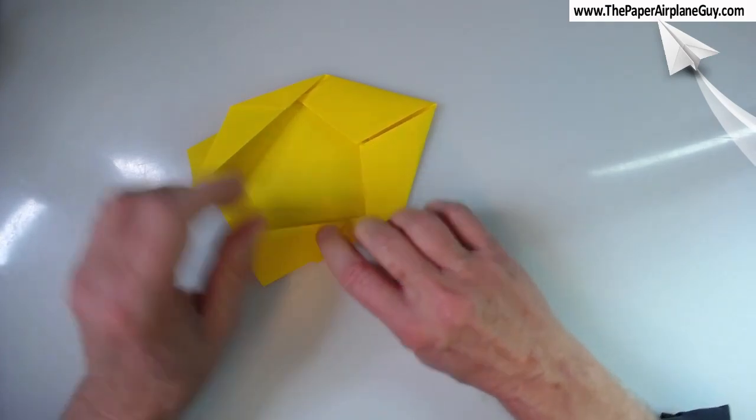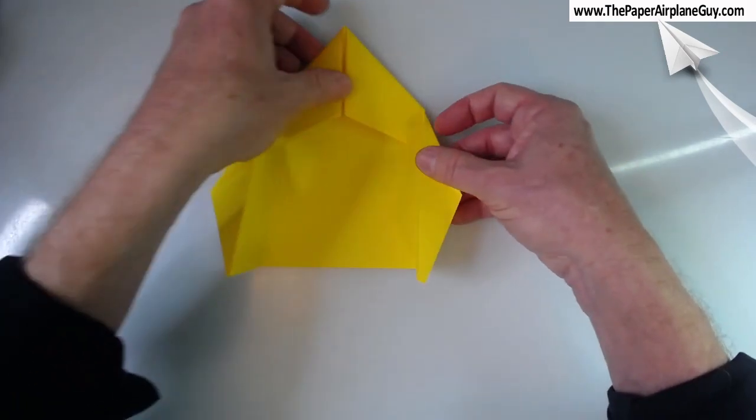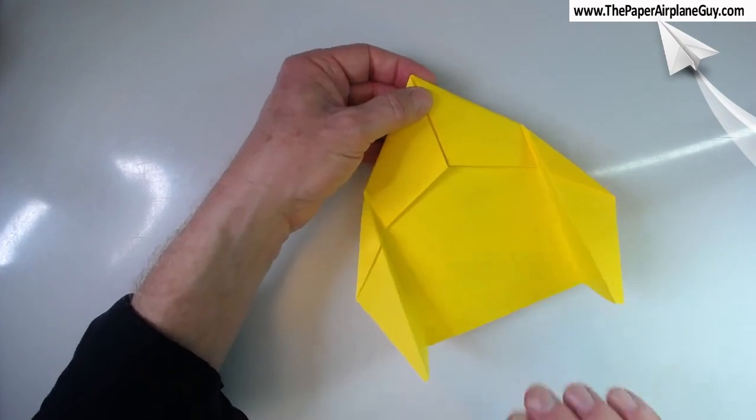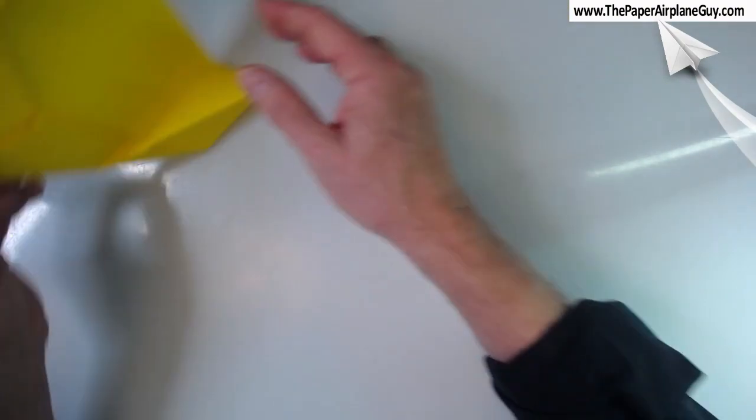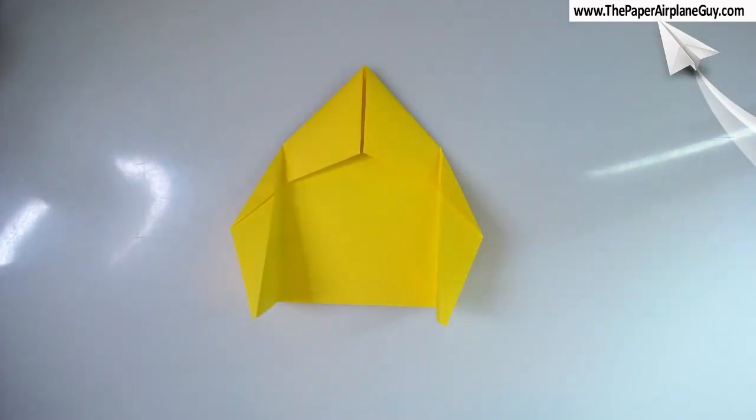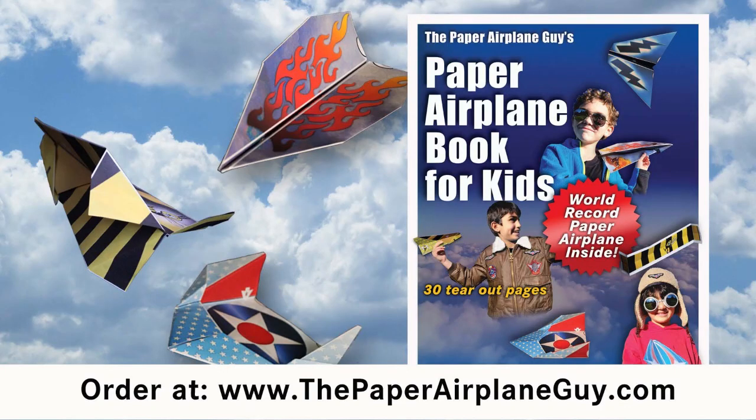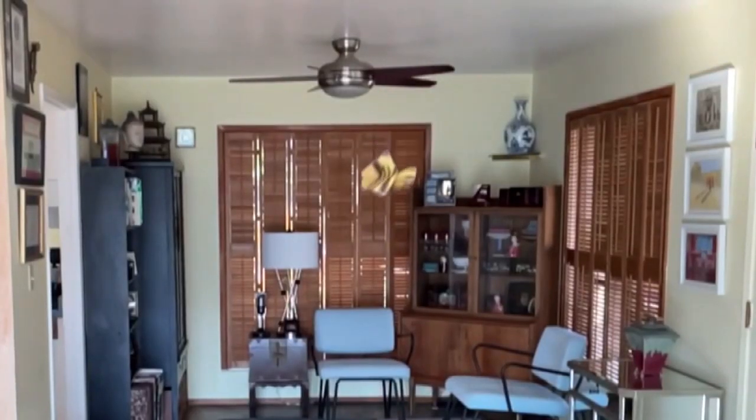And the fun thing about this guy, there are a couple of fun things about it, of course. It will circle back. The top of the plane is here. This is the top of the plane. So you're going to throw it kind of like that and it'll circle back. You'll see in the video here. Here, let me just show you. So here's the book. You can go to my website, thepaperairplaneguide.com to get the book.